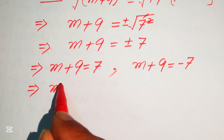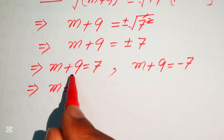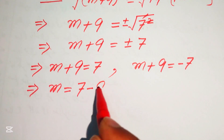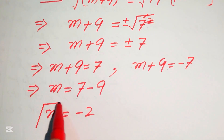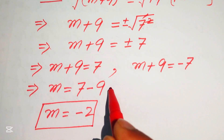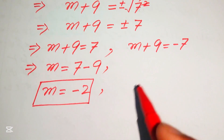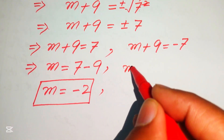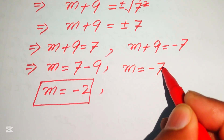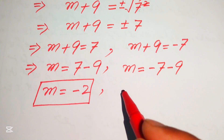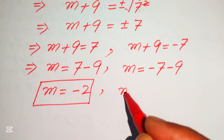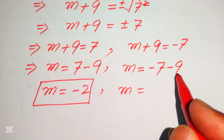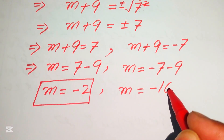In the first case, we move +9 to the right-hand side: m = 7 − 9 = −2. In the second case, we move +9 to the right-hand side: m = −7 − 9 = −16.